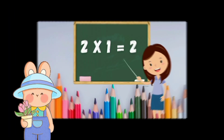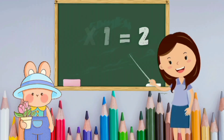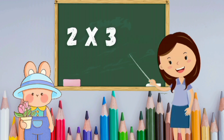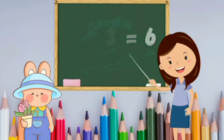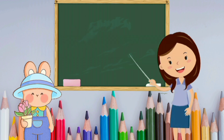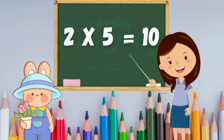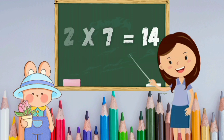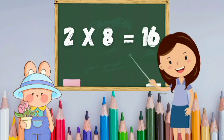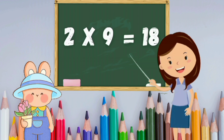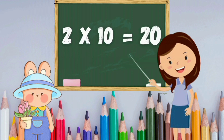Two, one's a two. Two, two's a four. 2 threes are 6. 2 fours are 8. 2 fives are 10. 2 sixes are 12. Two sevens are fourteen. Two eights are sixteen. Two nines are eighteen. Two tens are twenty.